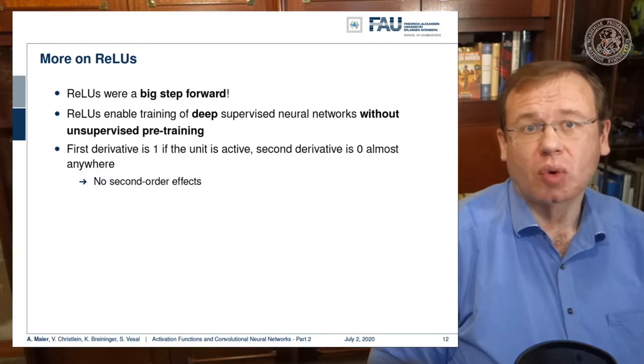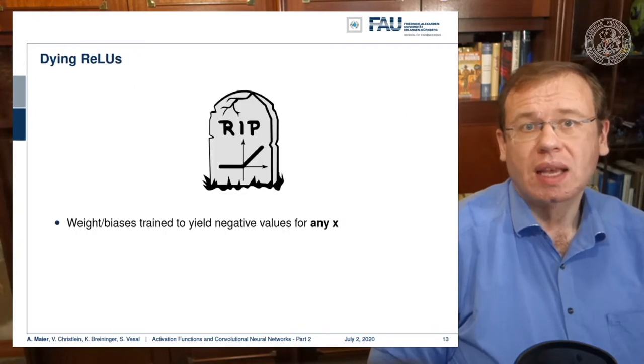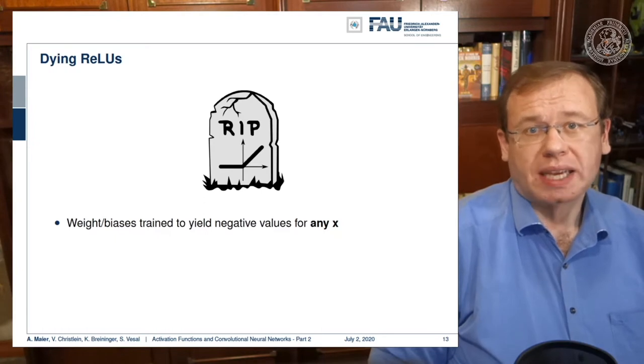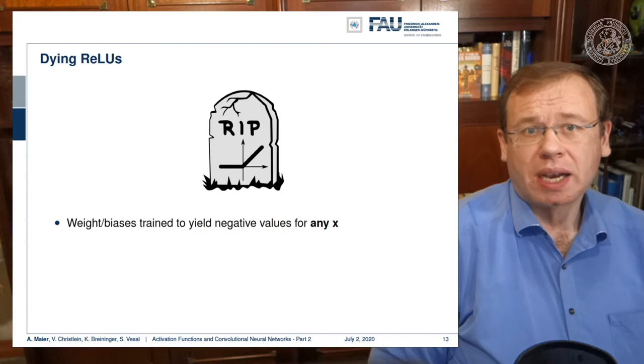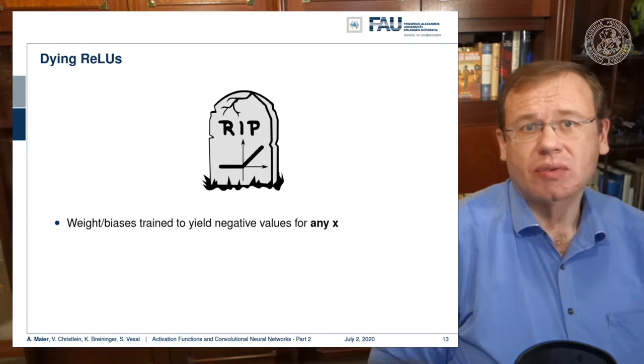There's no second order effect. One problem still remains. Dying ReLUs. If you have weights and biases trained to yield negative results for x then you simply always end up with a zero derivative. The ReLU always generates a zero output and this means that they no longer contribute to your training process.